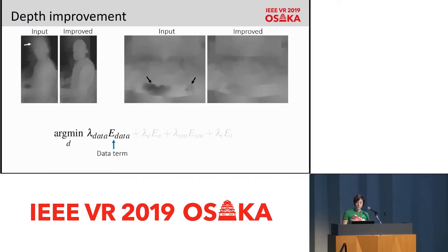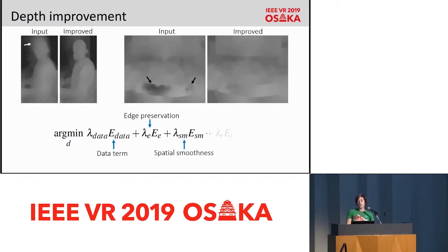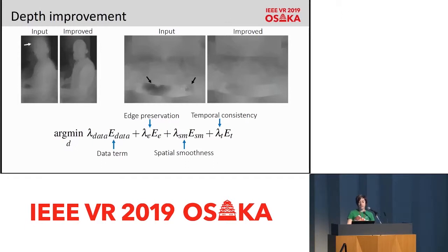In our optimization problem, we are looking for a new depth map that satisfies our constraints. First, the data term ensures fidelity to the input depth values. To enforce clean edges, we have an edge guidance term that penalizes propagation across edges. There is also a smoothness term that acts over local neighbors; this term includes a smoothness weight component based on depth local variance, so that smoothness is only imposed in regions where there are no abrupt changes in depth. Finally, a temporal consistency term is used to avoid temporal depth flickering. We choose the weight of each term empirically, and an evaluation together with more details about each term can be found in the main paper.